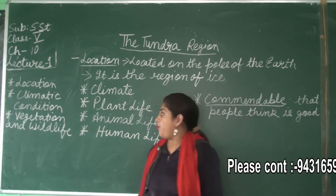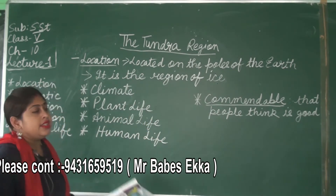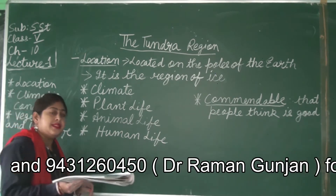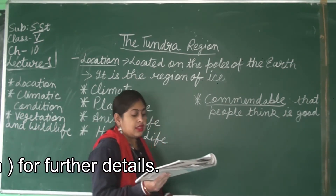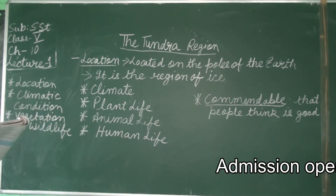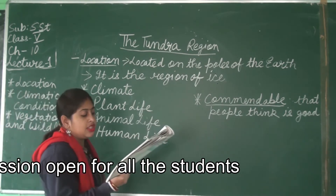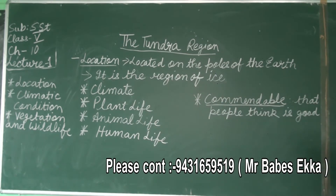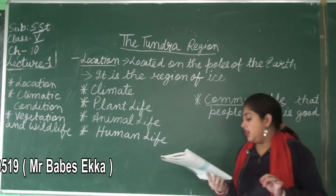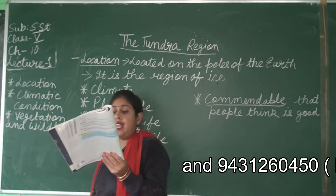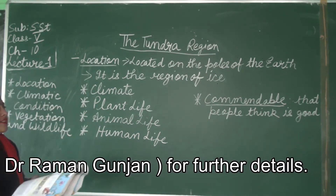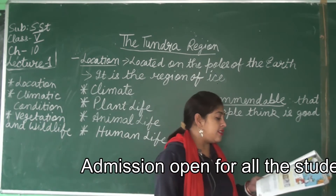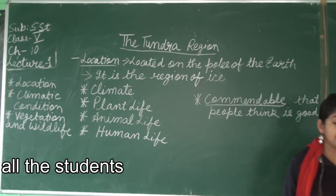Now about the climatic conditions, on page number 63: the Tundra region is the frigid zone of the earth. Due to its extreme conditions, the climate features cold weather and high wind conditions. This region lacks biodiversity compared to elsewhere on earth, because of the extreme cold weather and high windy conditions in the polar region.